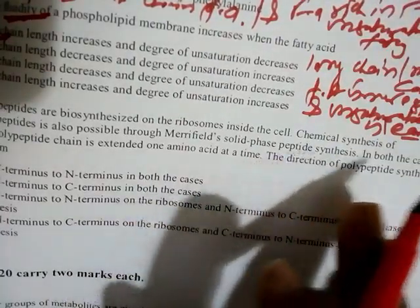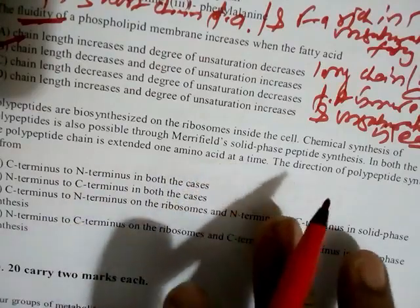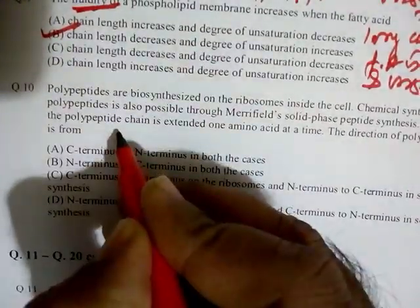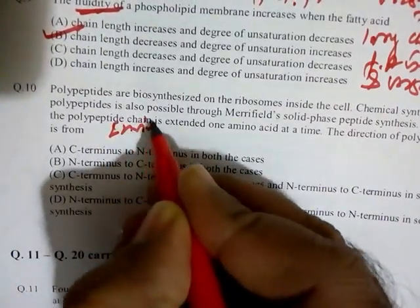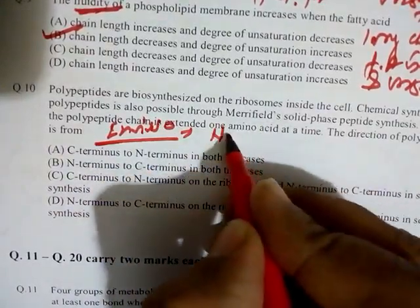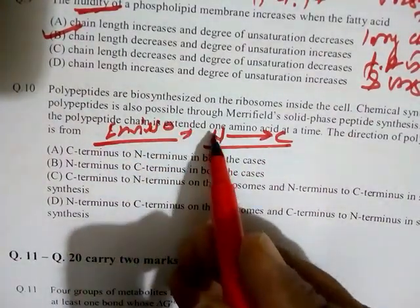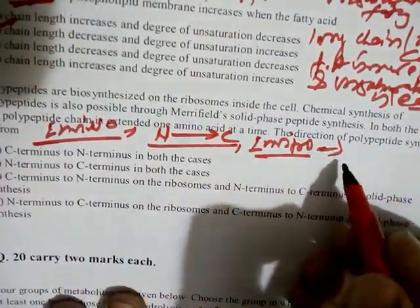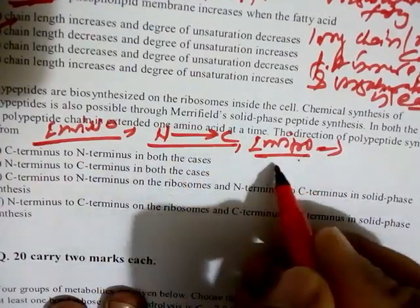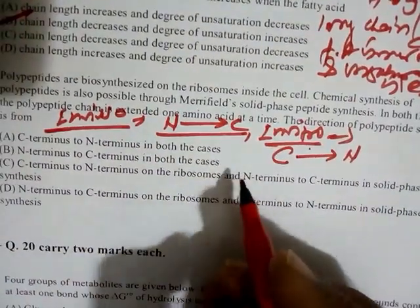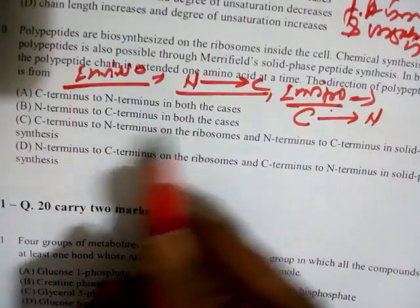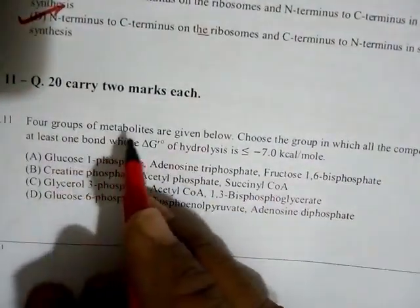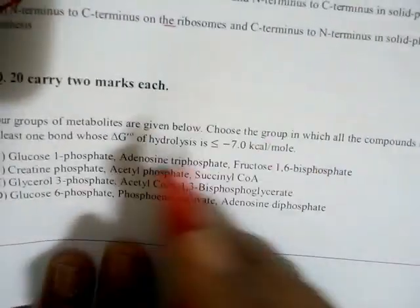Question ten: Polypeptide biosynthesis on the ribosome versus Merrifield solid-phase chemical synthesis — in which direction is the chain extended? In vivo (ribosomal synthesis), protein synthesis always proceeds from N-terminus to C-terminus. In vitro (Merrifield solid-phase synthesis), peptide bond formation proceeds from C-terminus to N-terminus — the opposite direction. The correct option is: N-terminus to C-terminus on the ribosome, and C-terminus to N-terminus in solid-phase synthesis.